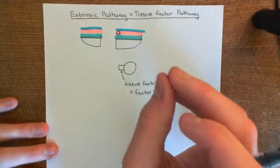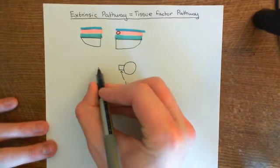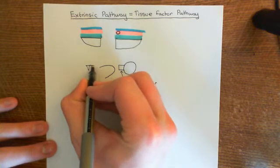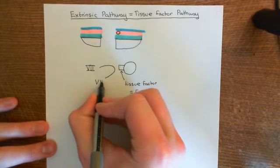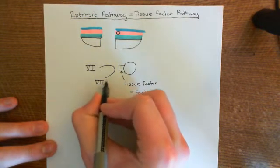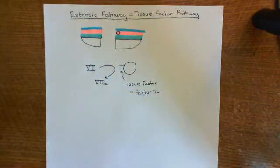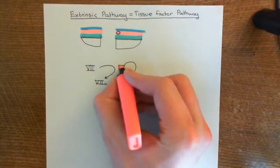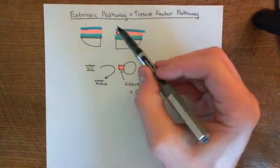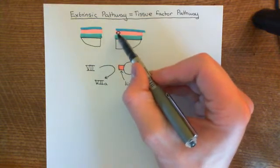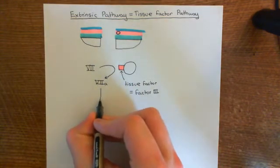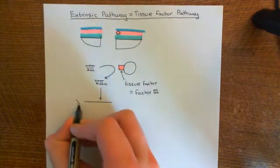Tissue factor is involved in activating platelets, and now we're going to see how it's also involved in activating a coagulation cascade. It converts coagulation factor 7 to 7a. Factor 3 is unlike the other coagulation factors in that it doesn't have an inactive and an active state — it's just factor 3, and it's always capable of converting 7 to 7a. It's just that it usually never sees factor 7, because 7 is in the blood and tissue factor is not exposed to the blood. But when you have a hole in the blood vessel, 7 will come in and meet this cell with tissue factor on it, and the tissue factor will convert 7 to 7a.